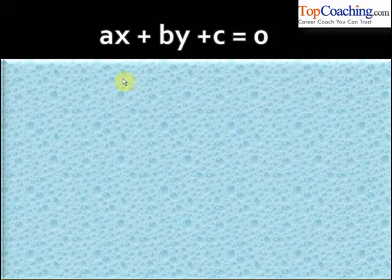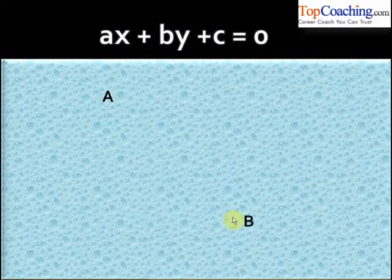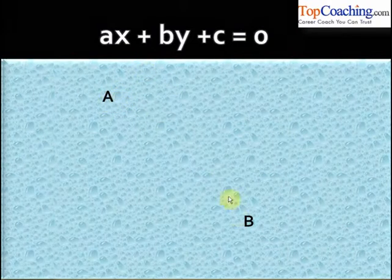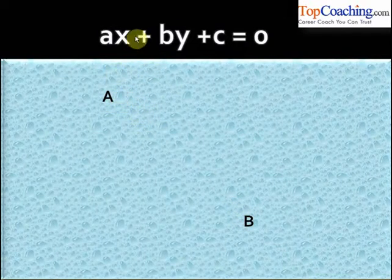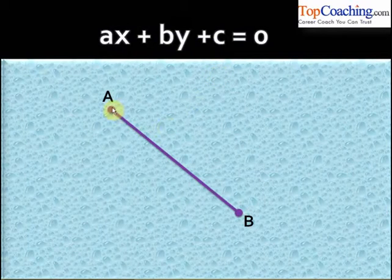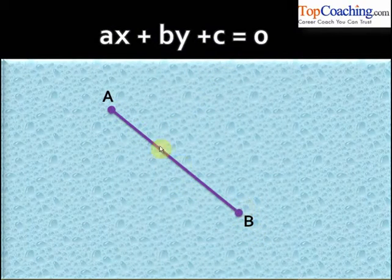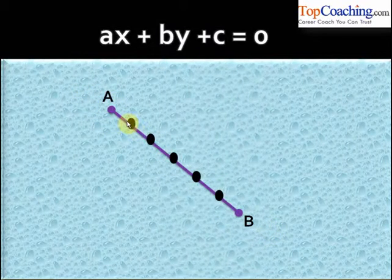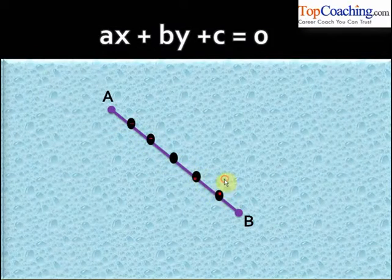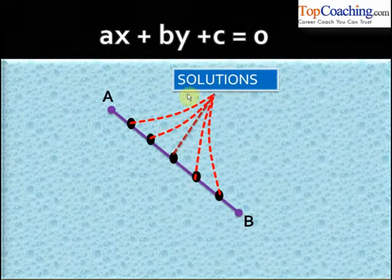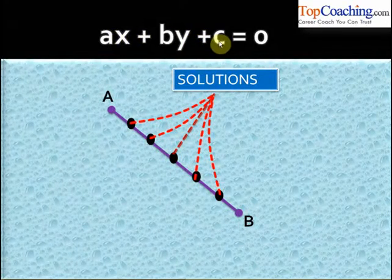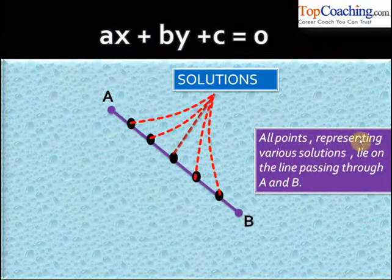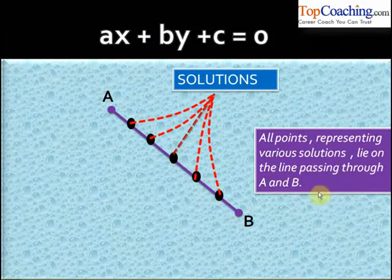Let us say that we have two points A and B, both being solutions of ax plus by plus c equal to zero. If we draw a line joining these two points, on this line we can have infinitely many such points. All these points are actually the solutions of the equation ax plus by plus c equal to zero.